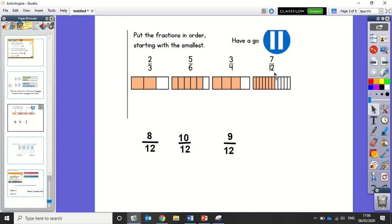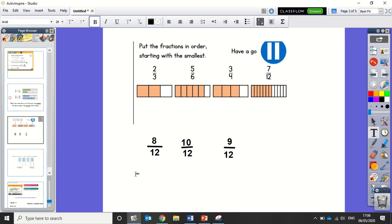My smallest fraction is this one. It's 7 twelfths. So the first one is 7 twelfths. Then it's 8 twelfths, which is 2 thirds. Then it's 9 twelfths, which is 3 quarters. And then my biggest fraction is 5, 6, which turned into 10 twelfths. There we go, that's better.